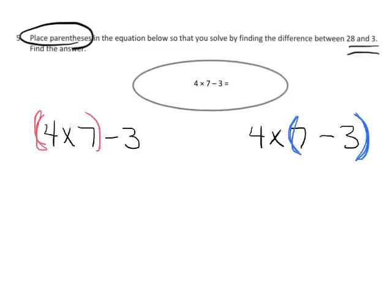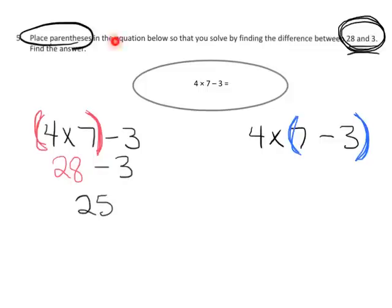When I put them around the 4 times 7, I get 28. 28 minus 3 is 25. Hey, that's exactly what they wanted me to do. Where would I have to put the parentheses so that I end up with 28 minus 3, the difference between 28 and 3? And so that's this answer right here. So we've got the answer. So technically we're done.